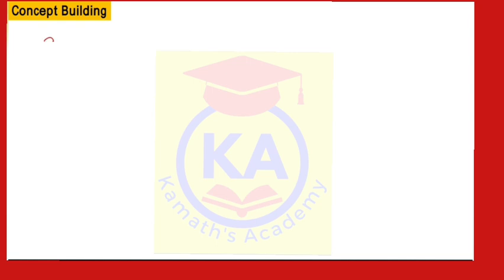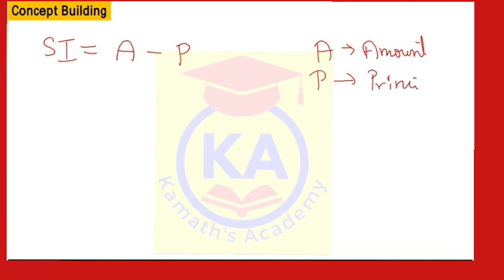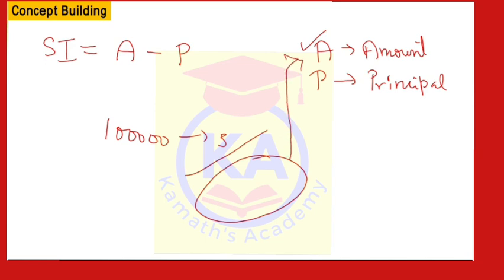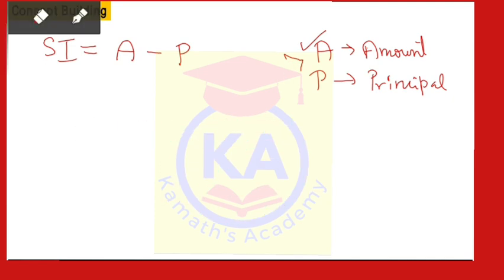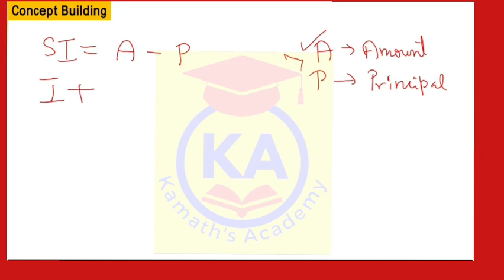The second formula: Simple Interest is equal to Amount minus Principal, i.e., SI = A − P. A is the amount, P is the principal amount. What is the meaning of amount? If you have deposited 1 lakh for 3 years, the amount which you will receive at the end of 3 years is called the amount. So: Interest plus Principal equals Amount — the amount invested plus the interest gives you the final amount you receive at the end of the period.